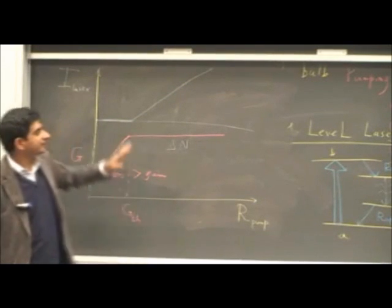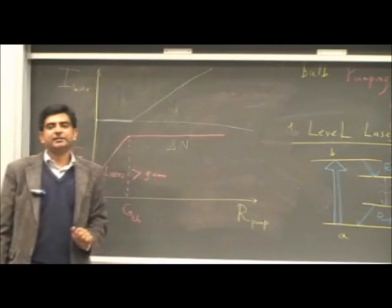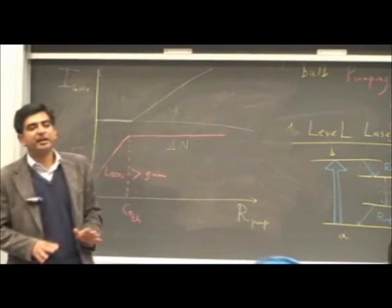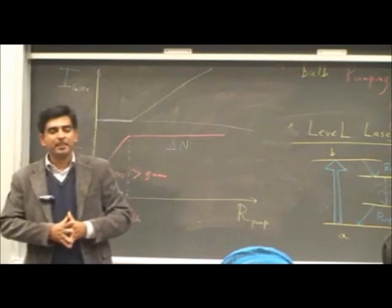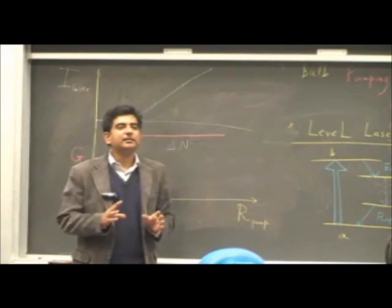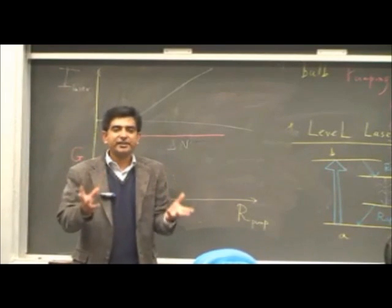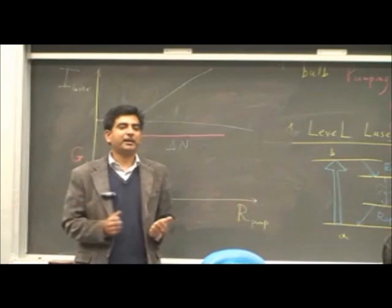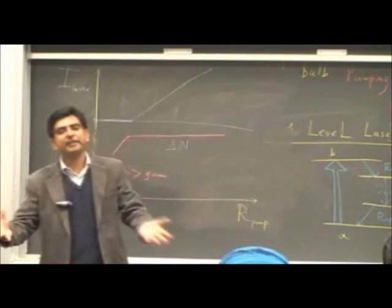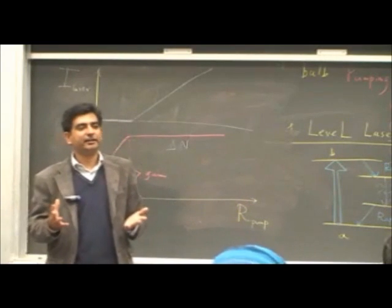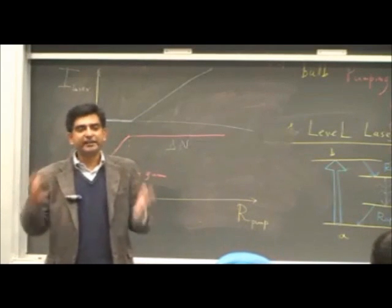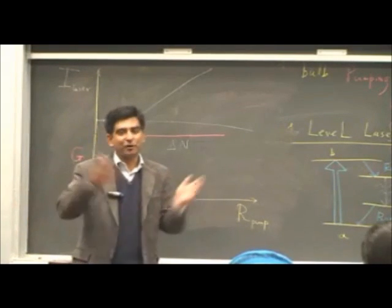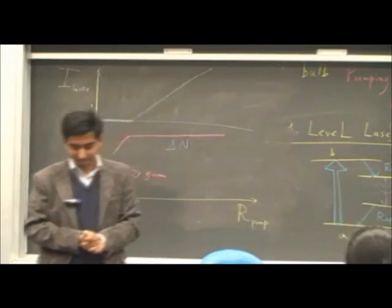So this is the general scheme of how a laser works. In our next lecture, which will take place on Thursday at the same time, we will discuss the characteristics of laser light: why the laser is monochromatic, what is the coherence of laser light, and what are the different kinds of lasers. Thank you very much for coming and I hope to see you again on Thursday.